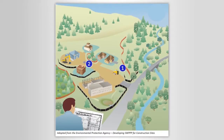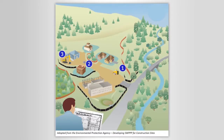Designated locations for the maintenance and handling of construction vehicles are also areas that need to be managed carefully. Washing construction equipment such as the washout from concrete mixers can easily be dispersed through the site and contribute to erosion, sediment loading and pollution if not managed properly.